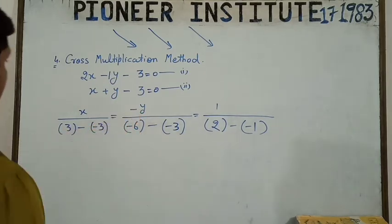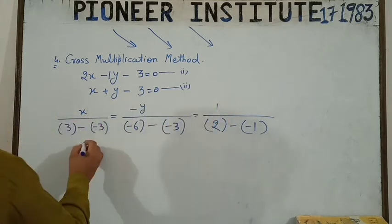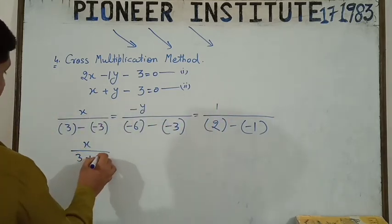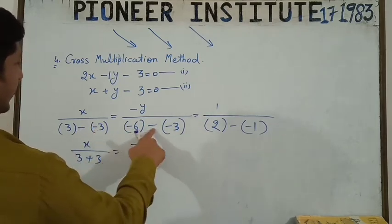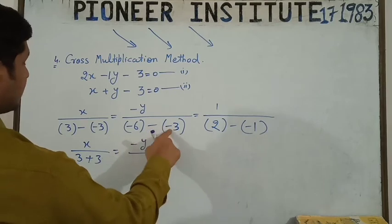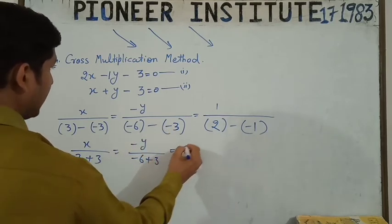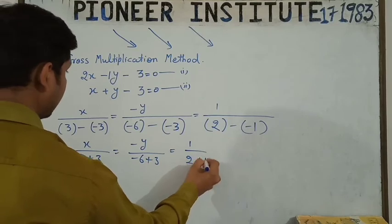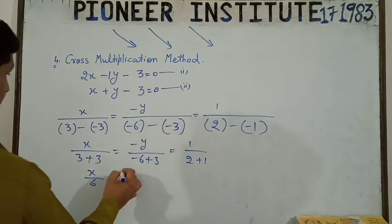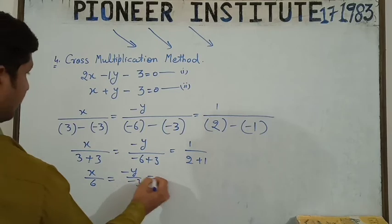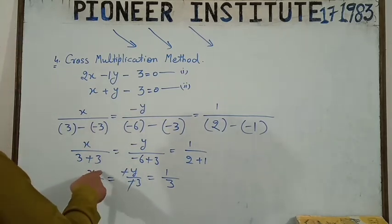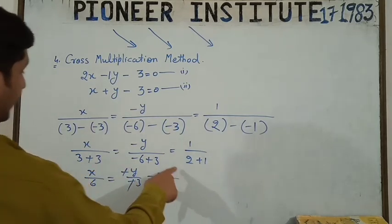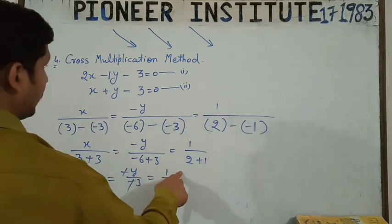We'll take x upon 3 plus 3 minus minus plus minus 6 into 6 plus 3 minus minus. So here 1 upon 2 plus 1 is 6 minus 1 minus 3, 1 upon 3. The minus cancels. Now you can get the constant, you can write 1 upon 3.